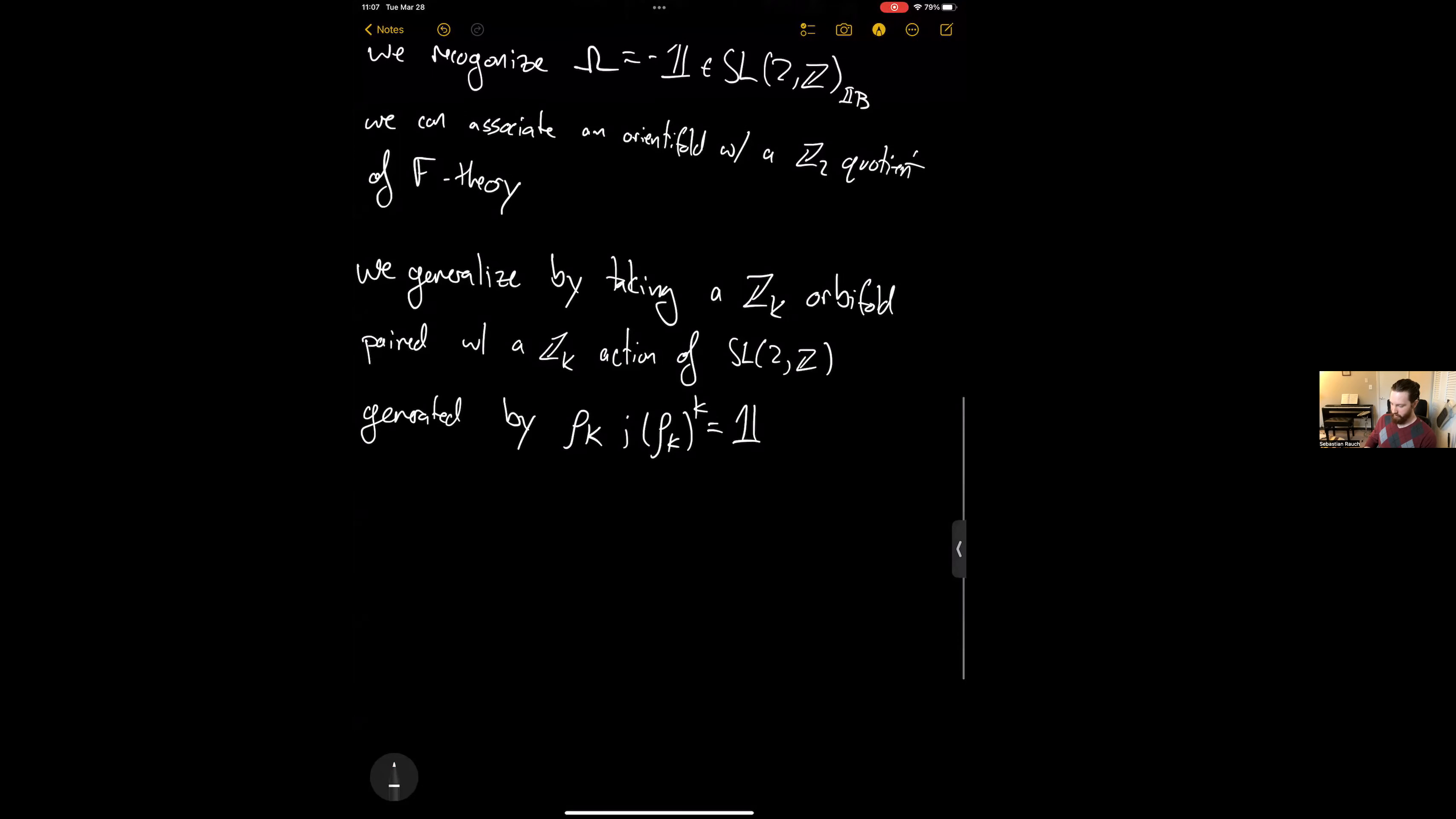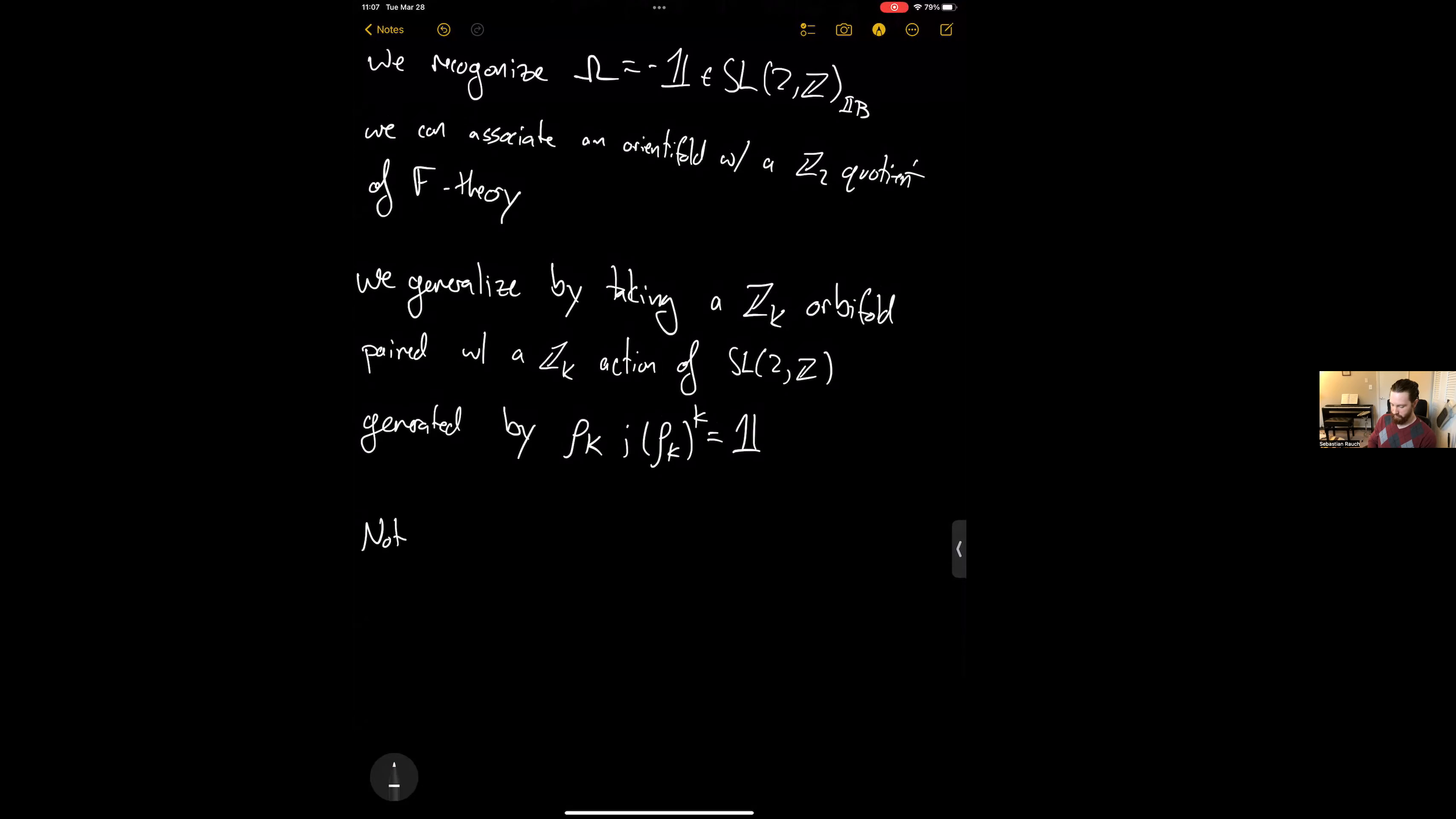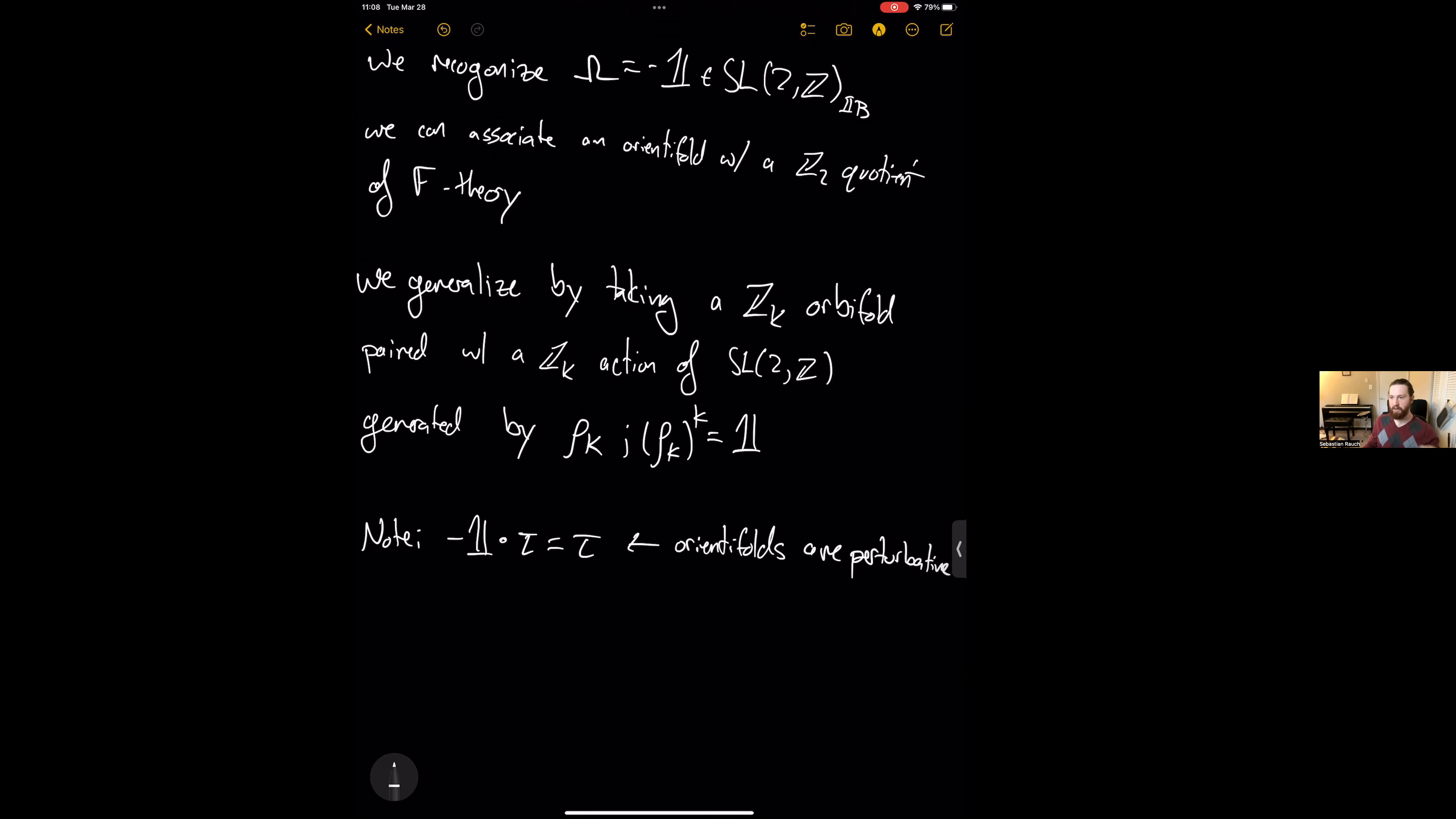Something worth noting is that in the case of Z2 minus one of course acts on the axial dilaton trivially and it's in a projective representation of SL2. And so in this sense orientifolds are a perturbative object because I'm allowed to take arbitrarily weak coupling. But in the case of these higher K, rho K will act non-trivially on tau and will actually fix us to some sort of strong coupling.